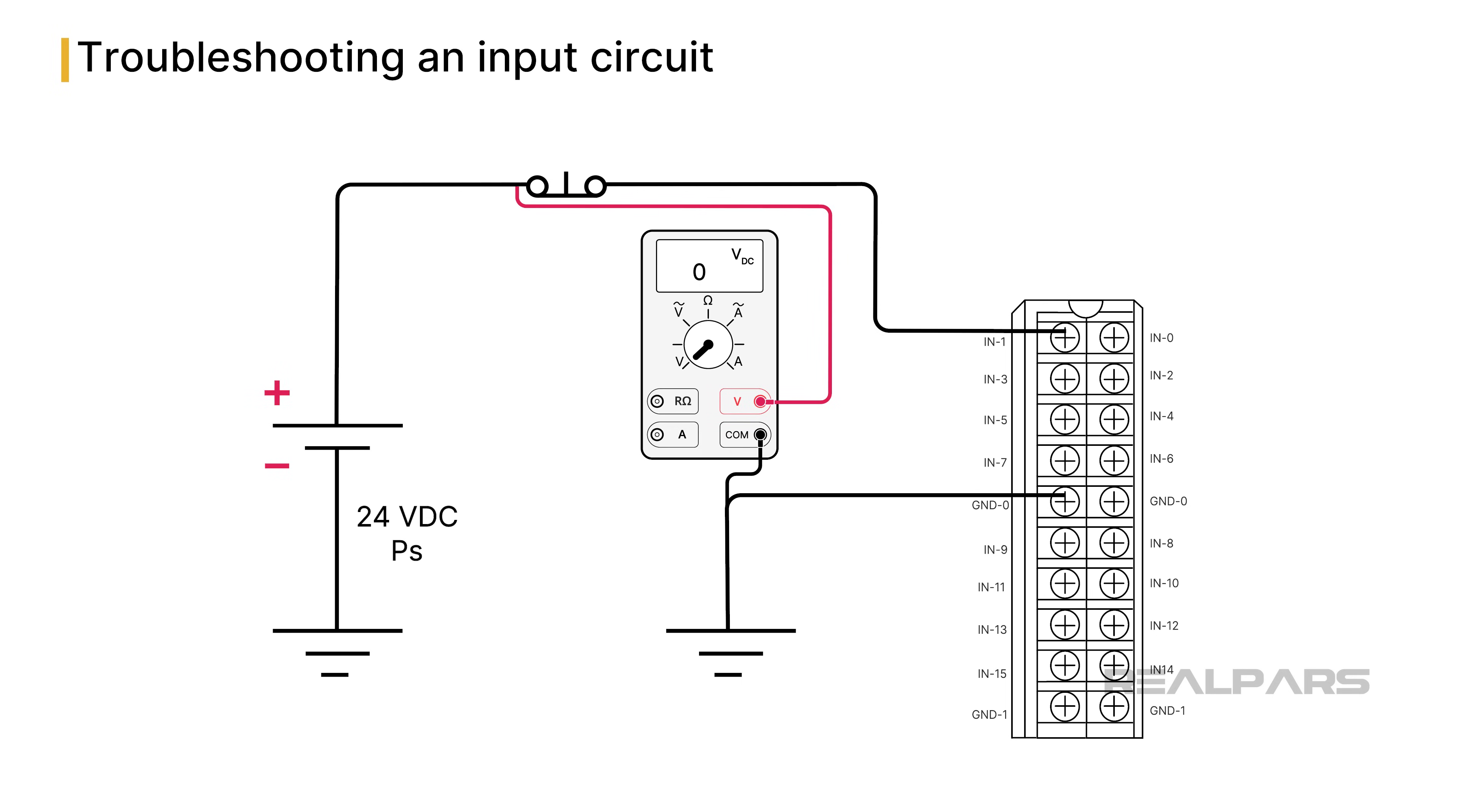The next step is to move the voltmeter red lead to the power supply side of the switch. If the voltmeter reads plus 24 volts DC, the power supply is fine, but the switch is likely defective. At this stage, you could test the switch with an ohmmeter, but based on the voltage measurements, that test is not necessary.